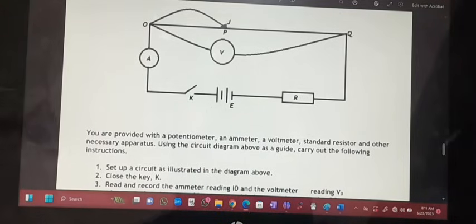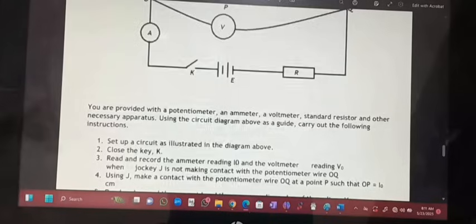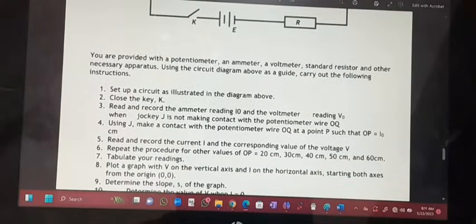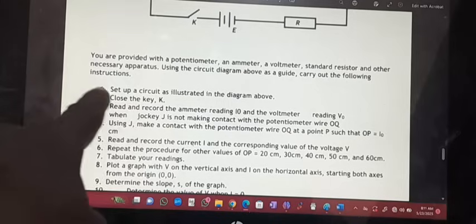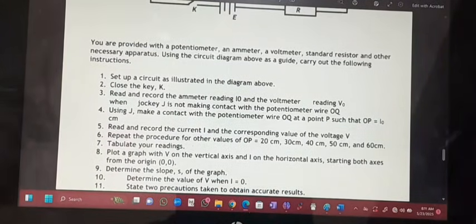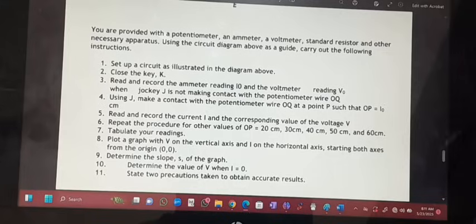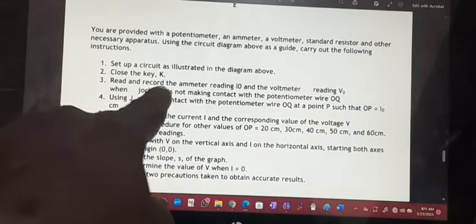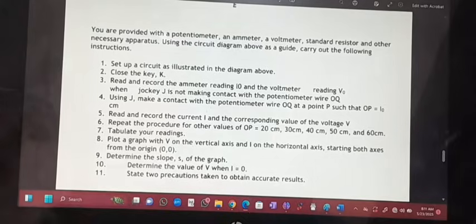But let's just read through the question and see how it looks like. So close the key. Number two, we are going to close the key. Three, read and record the ammeter reading I-not and the voltmeter reading V-not when jockey J is not making contact with the potentiometer wire O-Q.